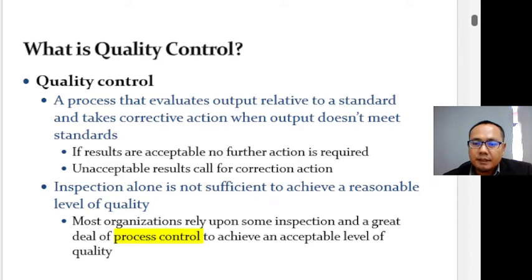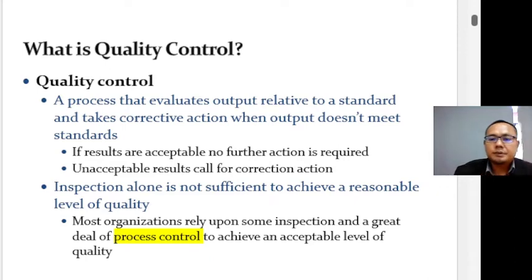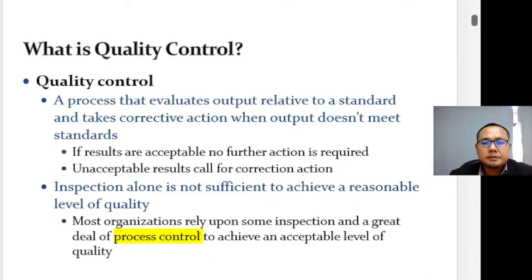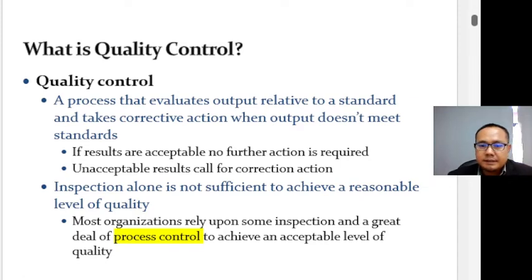Unacceptable results call for correction. Every process generates output that exhibits random variability — this is natural and cannot be corrected. However, if there are non-random variations in process output, those can be corrected. Quality control tools are used to decide when corrective action is needed.